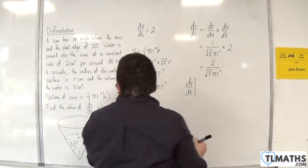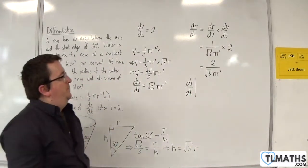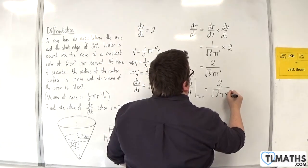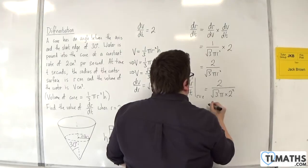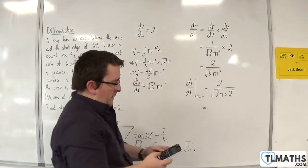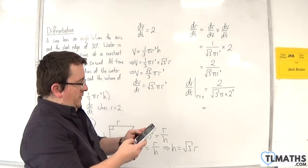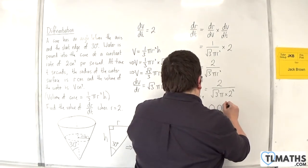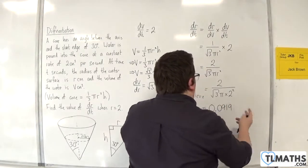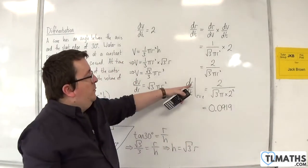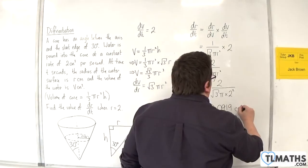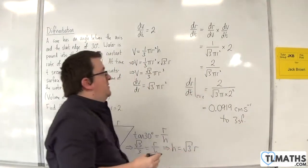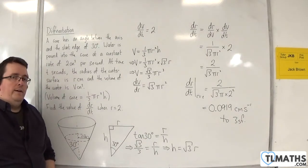Now I want to evaluate dr by dt when r is equal to 2. I need to substitute 2 into this. So I have 2 over root 3 pi times 2 squared, which is 2 over root 3 times pi times 4. We get 0.0919 to three significant figures. We want the units as well. We've got dr by dt, so the radius is in centimeters over time, which is in seconds. So the answer is 0.0919 centimeters per second to 3 sig fig.